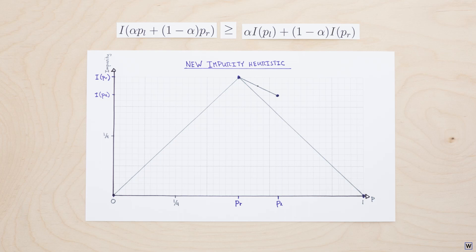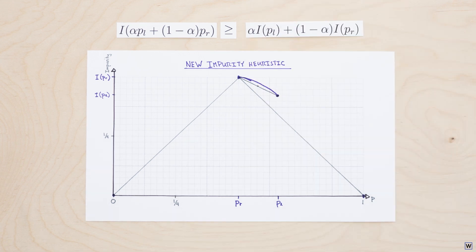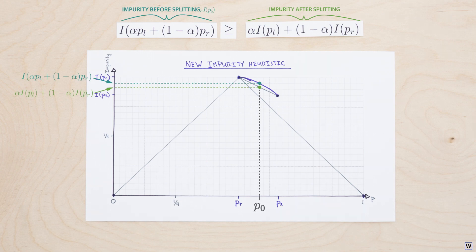Last time, we found the last piece of our decision tree puzzle. In order to identify promising splits and successfully grow our tree, our impurity heuristic must be concave. Now that we have a good idea of what makes a good impurity function, let's pick one.